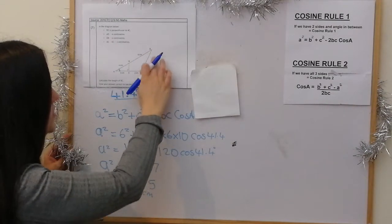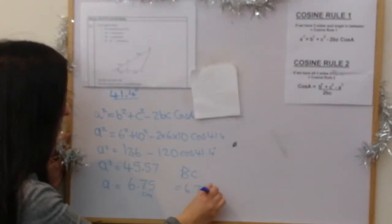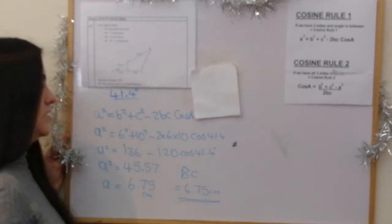So that is length BC. BC is equal to 6.75 centimeters. And that's our final answer.